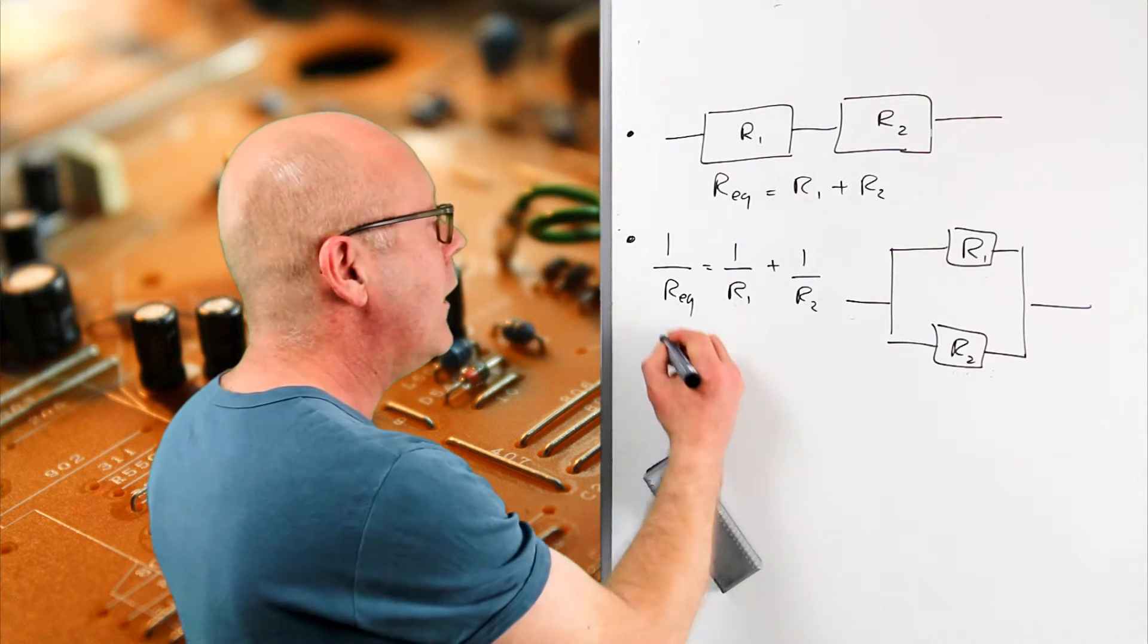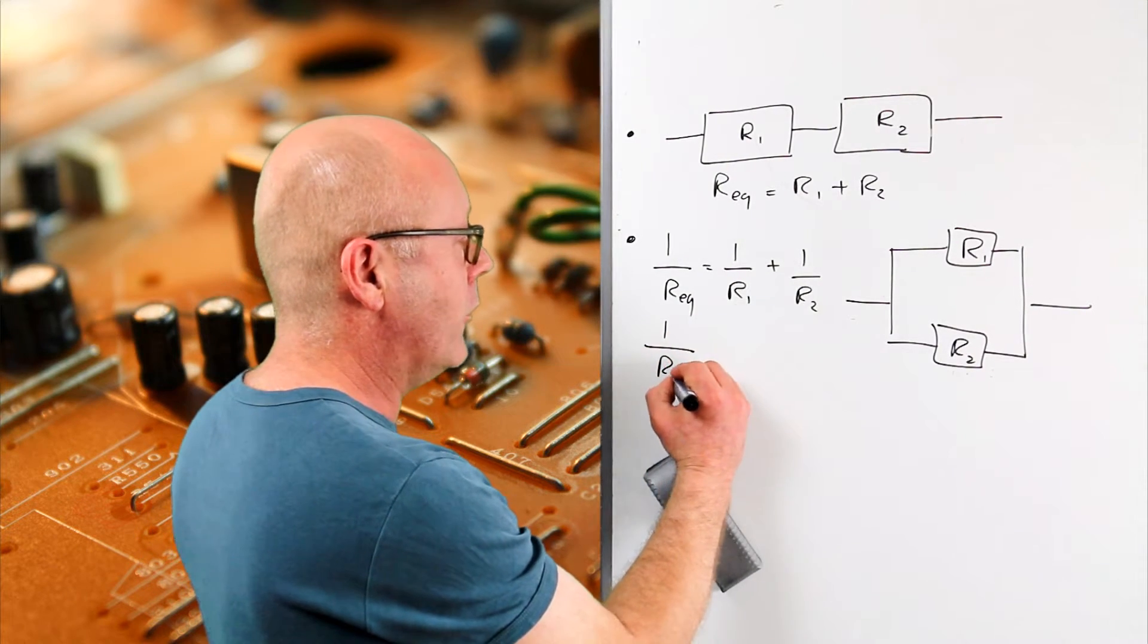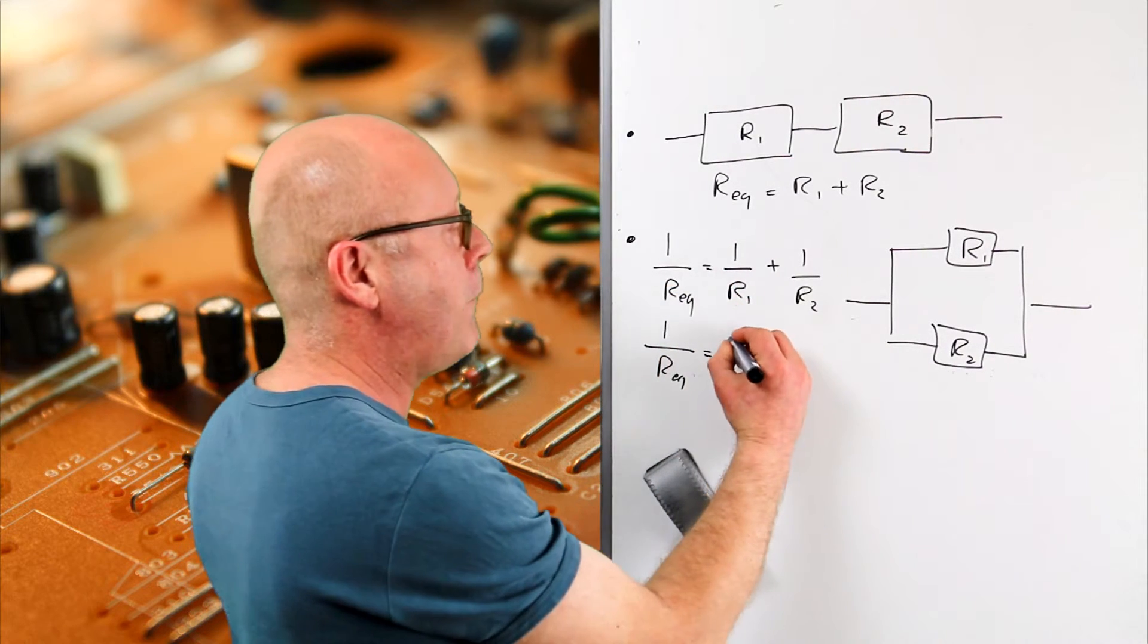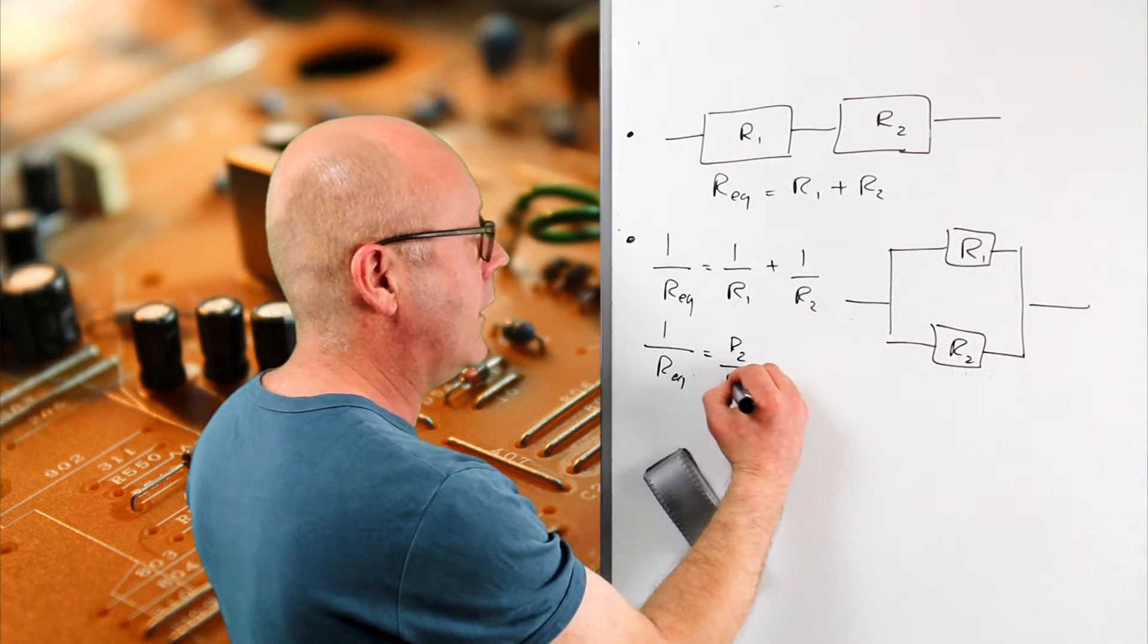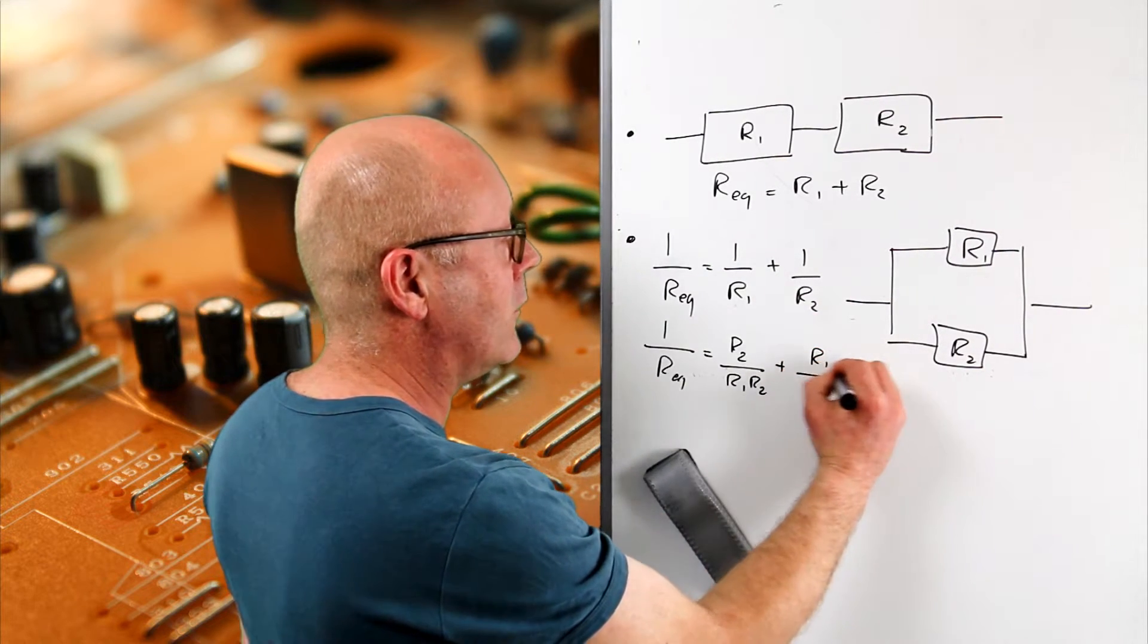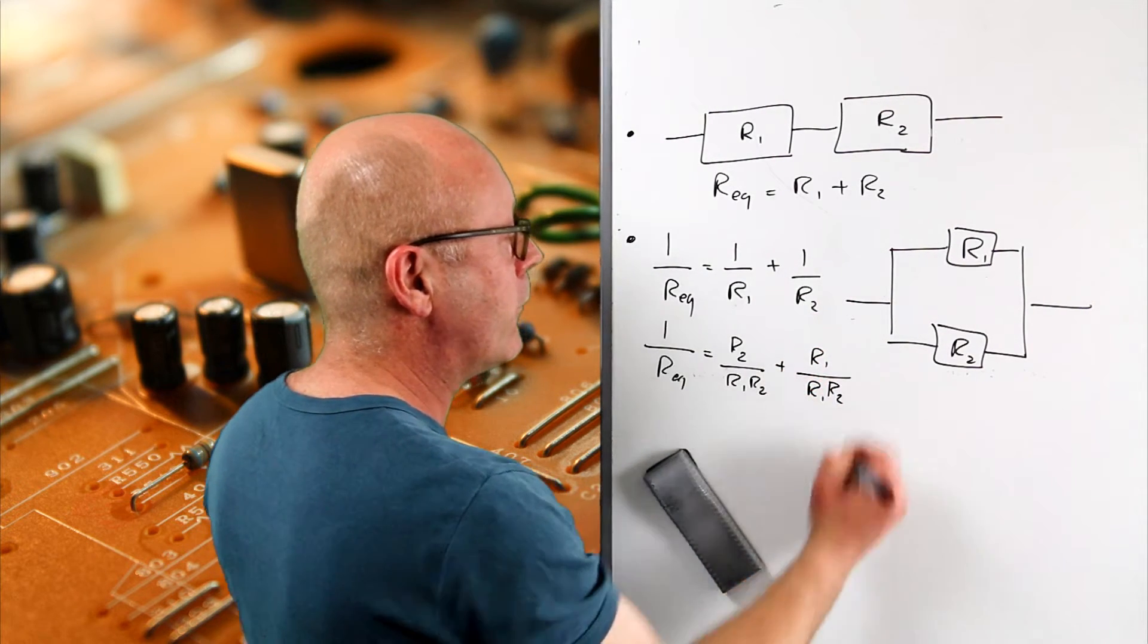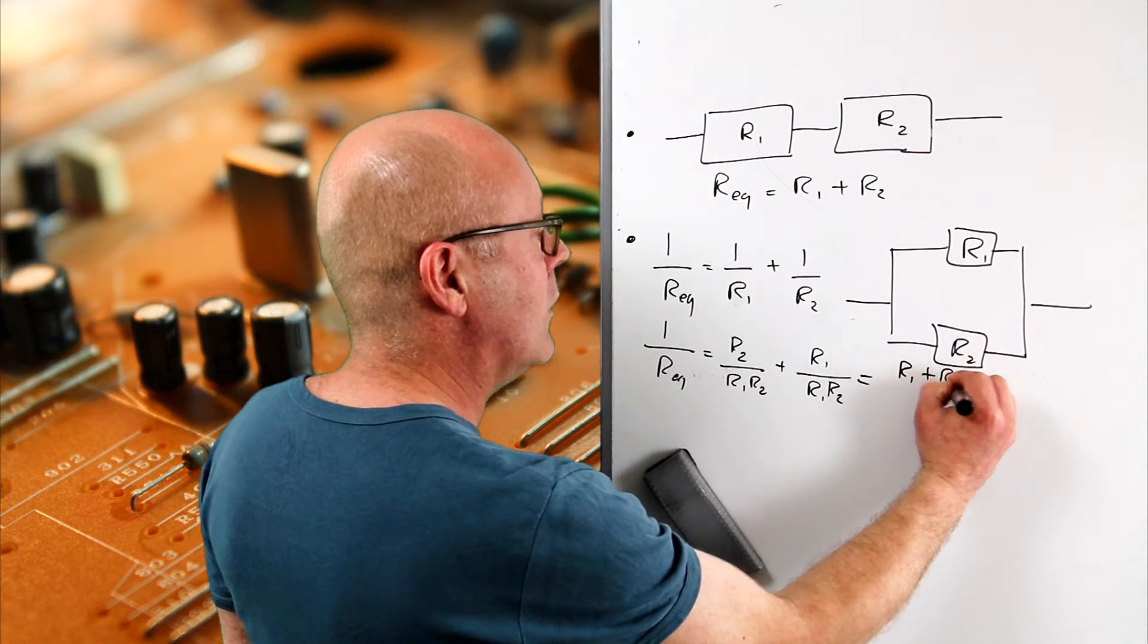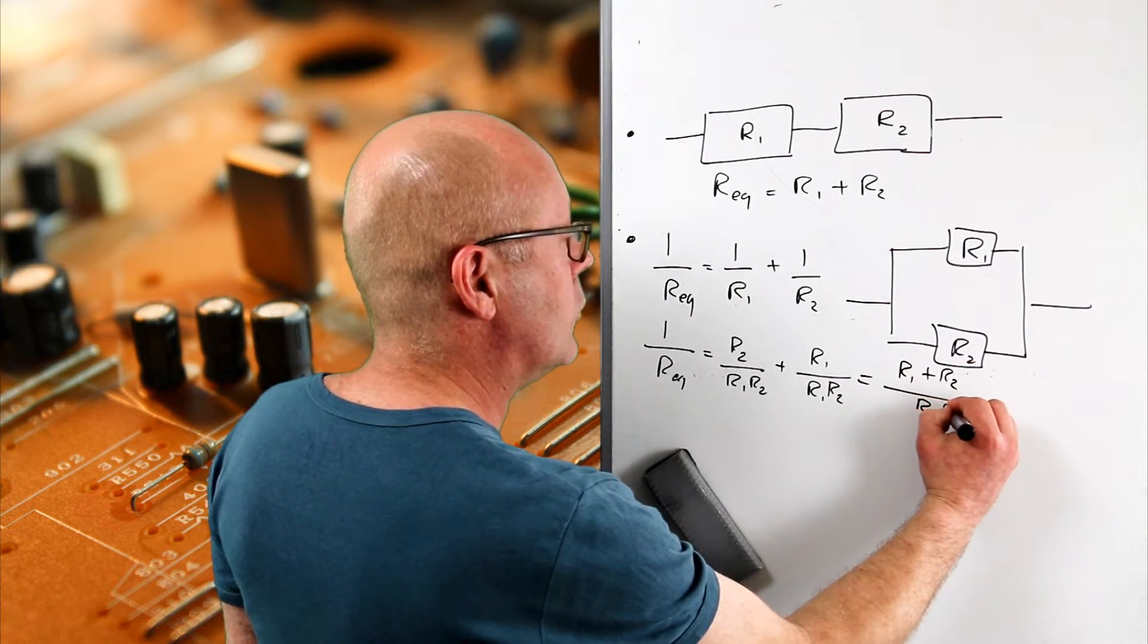I have to multiply R2 on both up and down sides. And I'll do the same with R1 on this one, R1 on R1, R2. I can add them. It gives me R1 plus R2 on R1, R2.